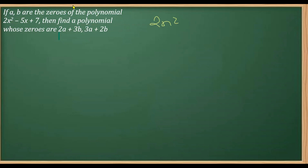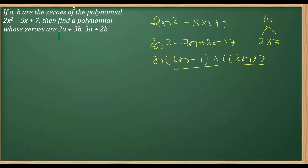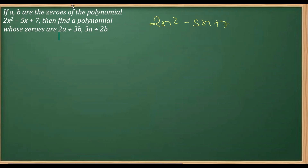Now, what a student normally does is try finding the zeros a and b by factorizing the polynomial. But you should see that this cannot be factorized into rational factors. For example, 2×7=14, and when you try splitting it, you get factors like minus 2x and minus 7x which don't work — so it cannot be factorized this way.